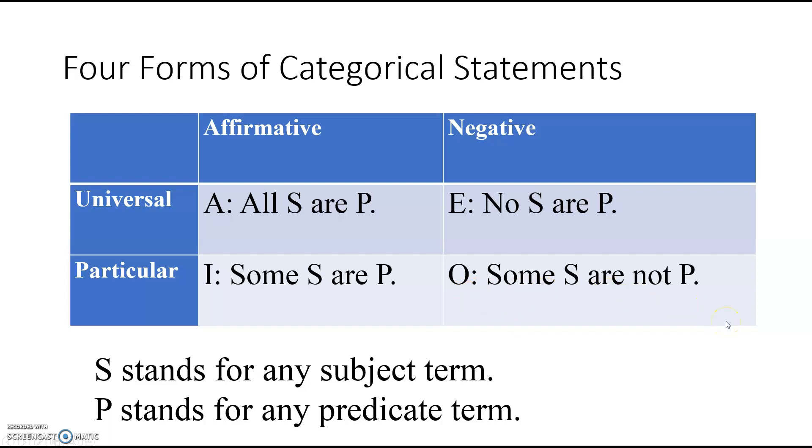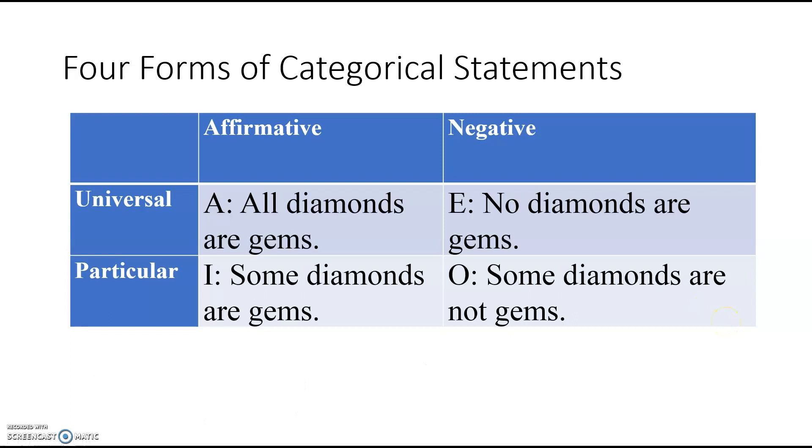Let me give you some concrete examples of these. An A statement would be all diamonds are gems. An E statement: no diamonds are gems. I statement: some diamonds are gems. And an O statement: some diamonds are not gems.